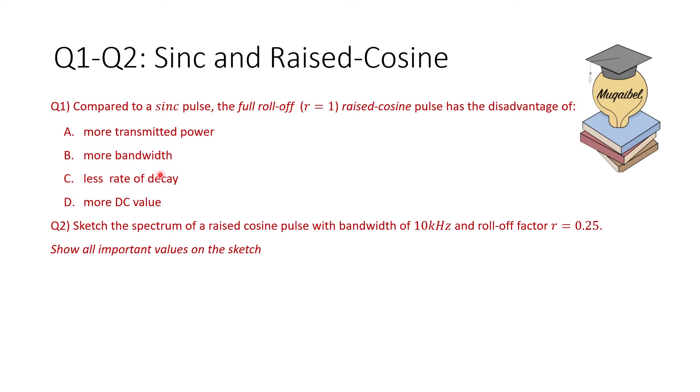Once you are done, you can continue with the video. Now I'm stating the answer to question number two. The answer is shown. Here is the spectrum. You should make sure that the spectrum ends at 10 kHz and the value of the minimum possible bandwidth is 8 kHz, and the value below which we have constant is 6 kHz. So these are the important values.